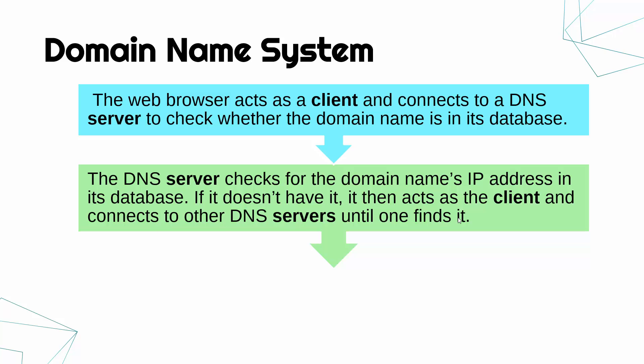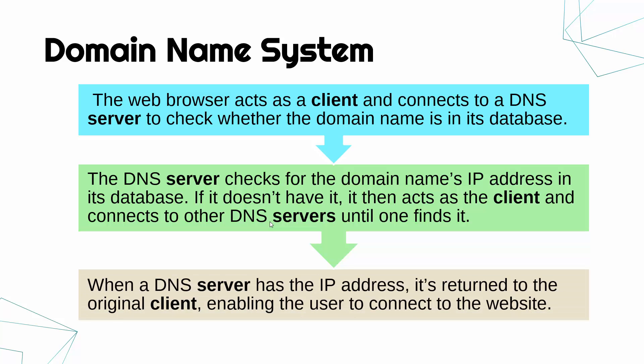The DNS server is checking to see if the domain name is in its database. If it isn't, it won't give up — it will then act as a client like your browser did and ask other DNS servers. There are loads of DNS servers scattered about, owned by companies like Sky, Virgin Media, BT, Google, and Microsoft. It keeps asking until one DNS server finds it. When a server has the IP address, it will return it to the original client, which was the web browser, and that enables the user to connect to the website because they now have the IP address and can connect directly to the host. So a lot goes on behind the scenes when you are connecting to websites — the DNS is the system which does this.